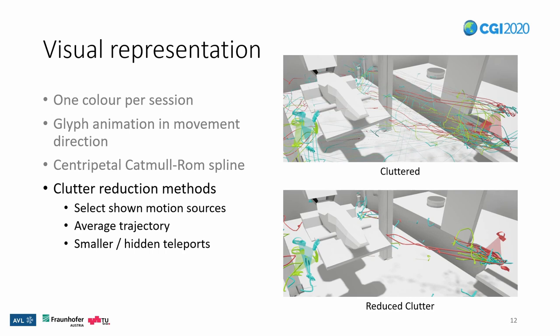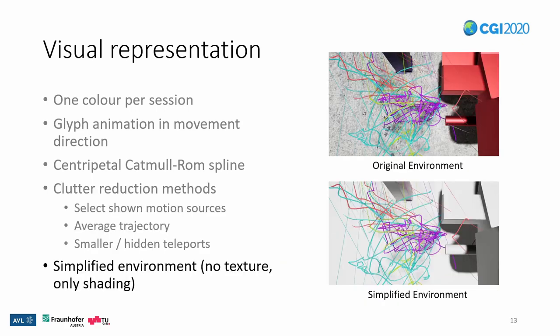You can see a normal scene on top and a scene with all clutter reduction methods in place on the bottom. Finally, the environment itself might contribute to visual clutter due to its colors and patterns. Users can simplify the environment by removing all textures and only using shading. This simplification has the potential to remove unwanted distraction and, in this example, to make sure that we can still see all red trajectories.